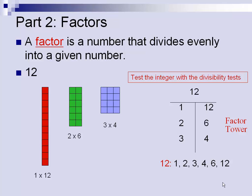So when we list our factors, our factors for 12 would be 1, 2, 3, 4, 6, and 12.